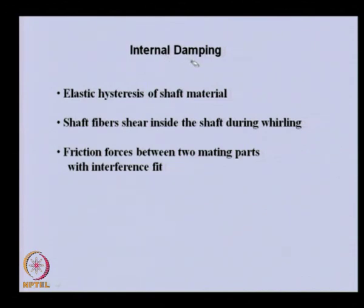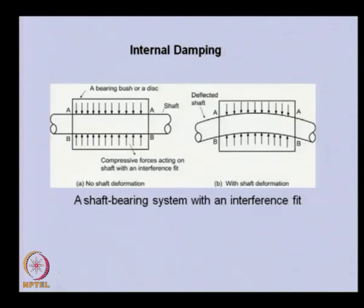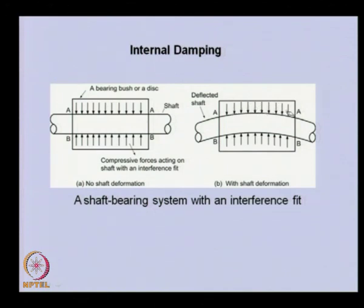Internal damping has a slightly different characteristic compared to viscous damping. For example, when we have a shaft with a hub or disc in a shrink fit, during vibration or whirling, the shaft bends. Because of the compression from the interference fit, the upper fiber of the shaft will elongate and the lower one will get compressed. These forces resist the extension or contraction of the shaft, giving internal damping between two mating parts having interference fit.